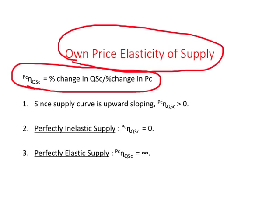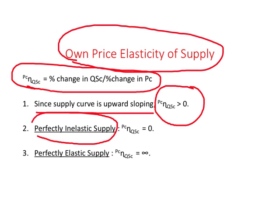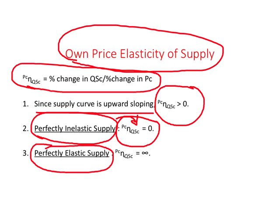Because the supply curve is upward sloping, own price elasticity of supply will be a positive number. There are two key classifications: perfectly inelastic supply, where when price changes nothing happens to supply — the value of own price elasticity of supply equals zero. Perfectly elastic supply has a value of infinity or undefined.